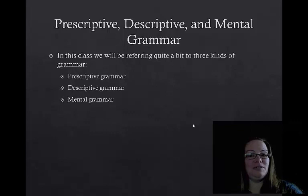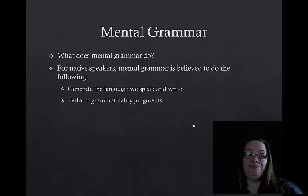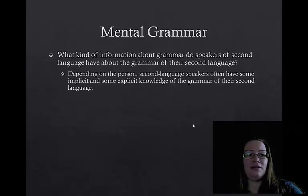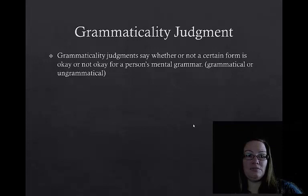The first type is mental grammar. Every native speaker of a language has an intrinsic, implicit, and unconscious knowledge of that language's grammar. In this class, we will refer to this knowledge as a mental grammar. Mental grammars for native speakers are believed to generate the language that we speak and write, and they allow us to perform grammaticality judgments. In a second language, it depends on the person — second language speakers often have some implicit and some explicit knowledge of their second language's grammar.